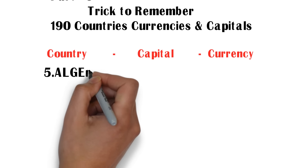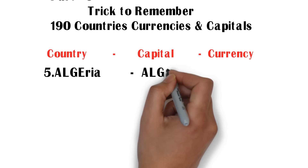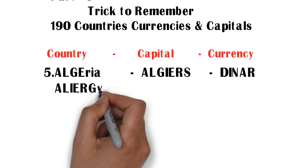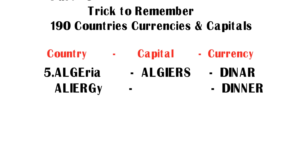Fifth one — country: Algeria. Its capital is Algiers, and its currency is Dinar. But how to remember the country Algeria's capital and currency? Let us see the trick.